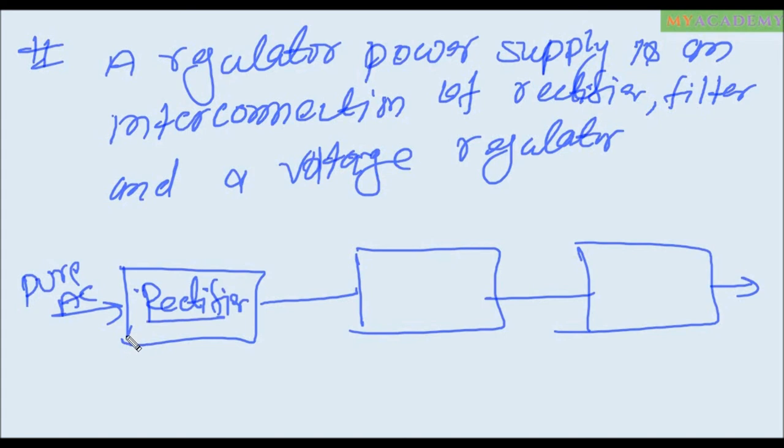Rectifier convert pure AC into DC signal means the output of rectifier is a pulsating DC. Pulsating DC means AC plus DC combination of AC and DC signal. This is the filter, filter is a selective network.